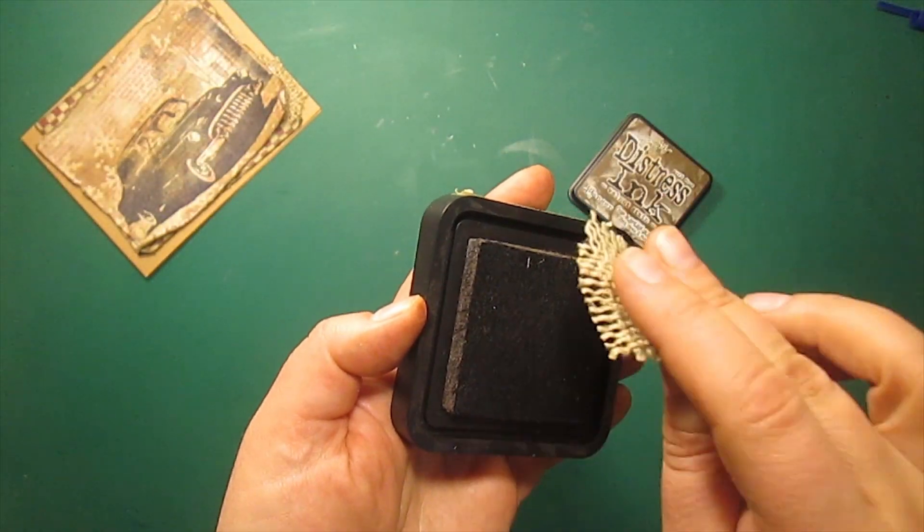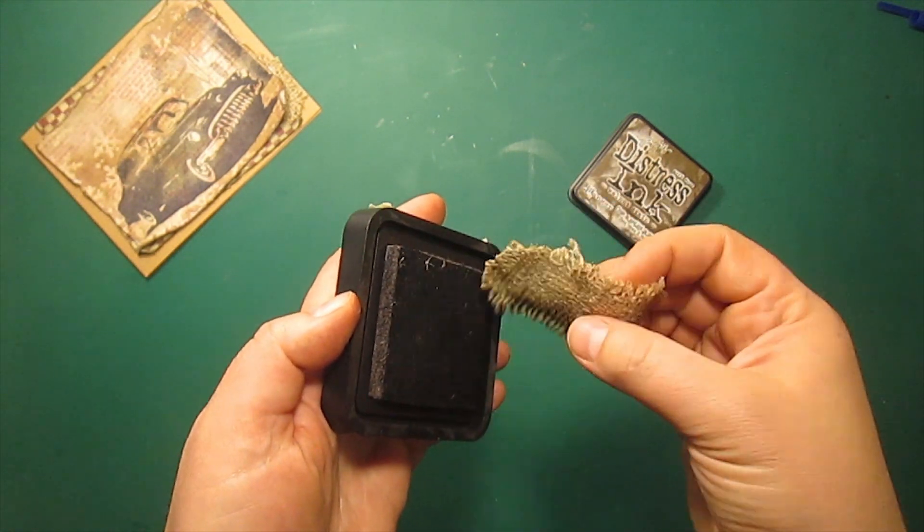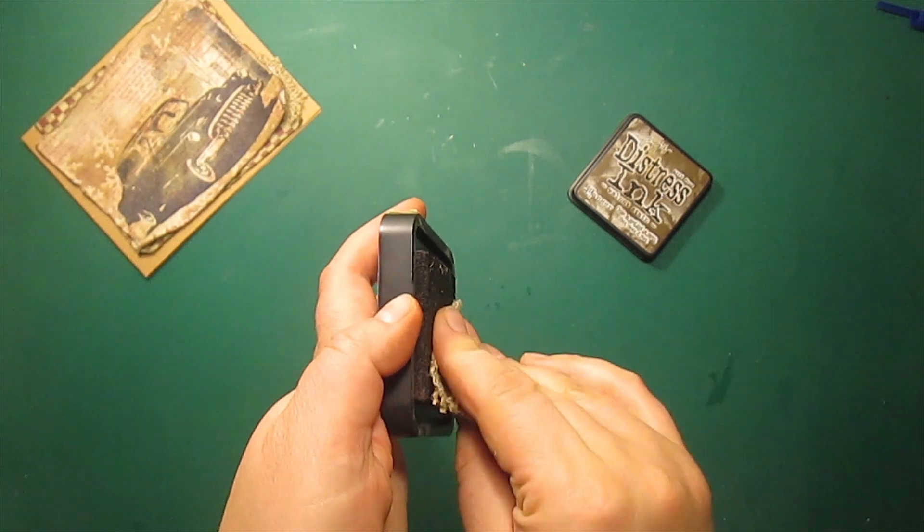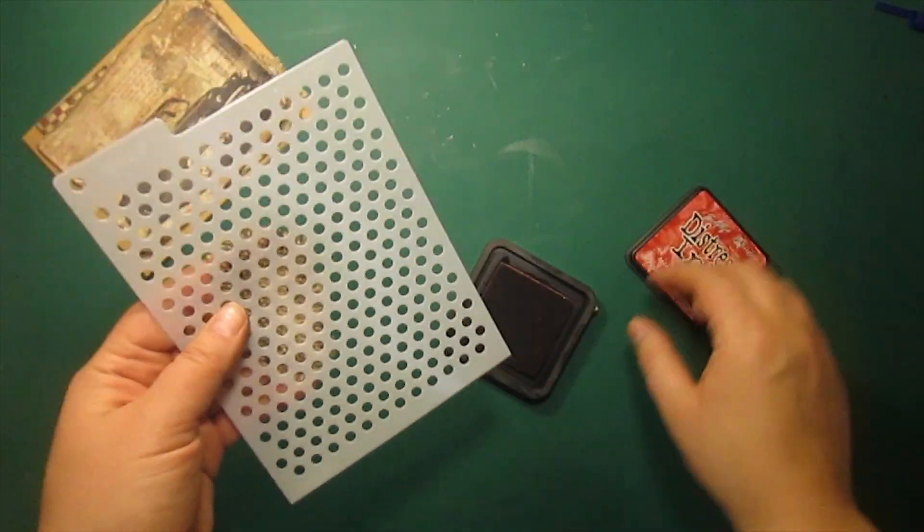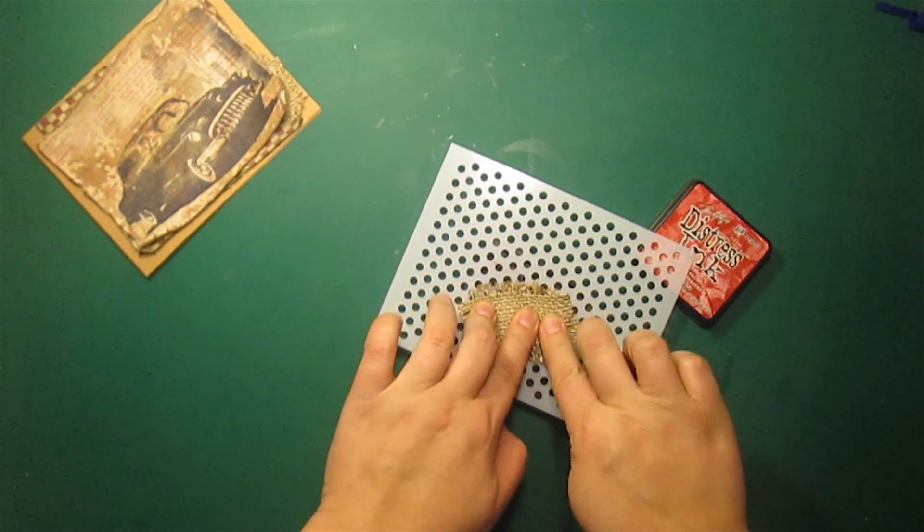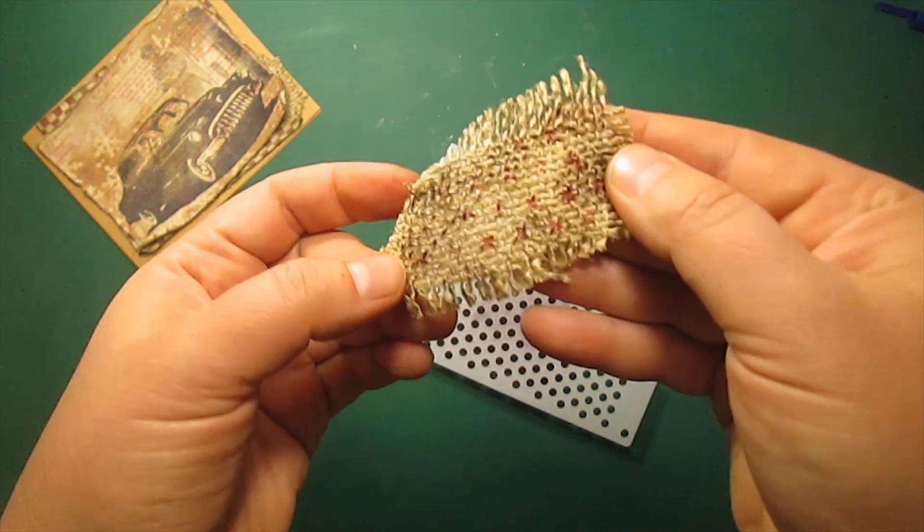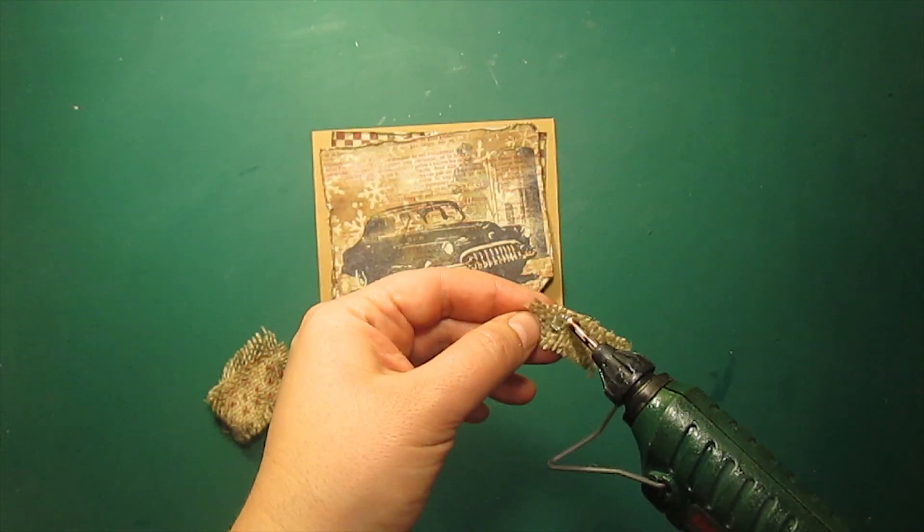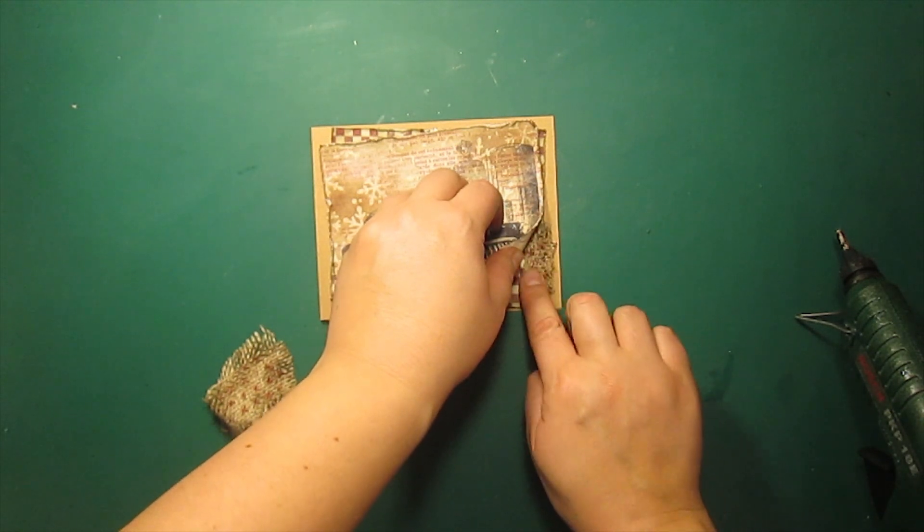To distress the fabric I'm pressing it right onto the ink pad and kind of swiping it along. Then I'm going to press the fabric through the polka dot stencil onto the fired brick ink pad. I'm attaching my burlap to the card using the hot glue gun.